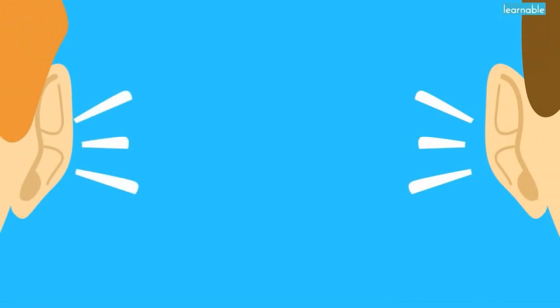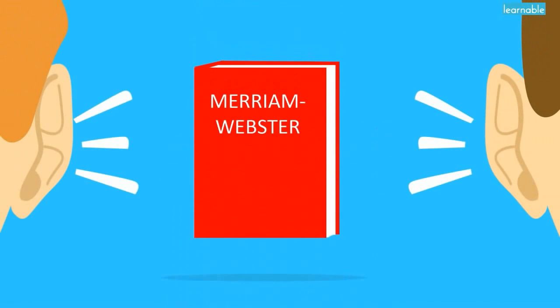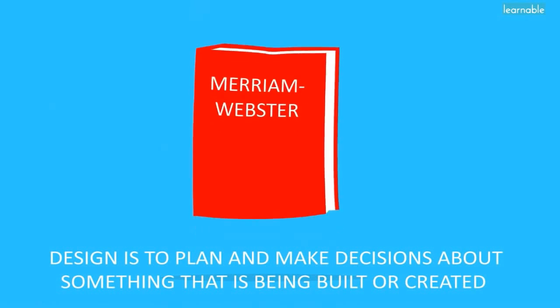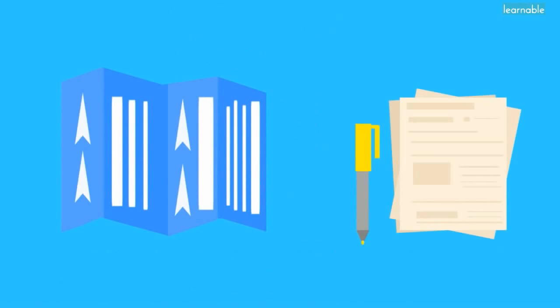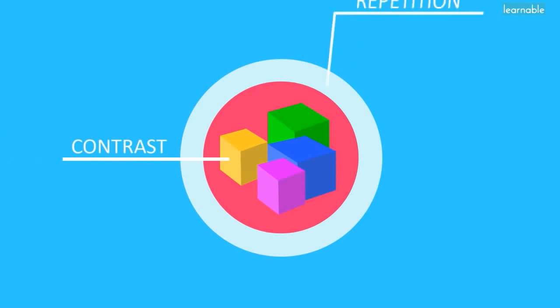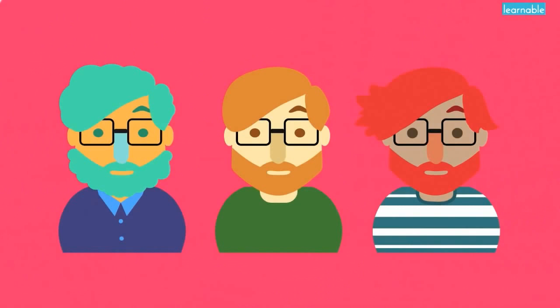We have all heard the word design before, but what exactly is it? According to Merriam-Webster's dictionary, design is to plan and make decisions about something that is being built or created. But design is so much more than blueprints and projection sheets. Design is a mixture of many elements including the basic principles and building blocks like contrast, repetition, alignment, and proximity — not to mention your own personal creativity that you bring to the project.